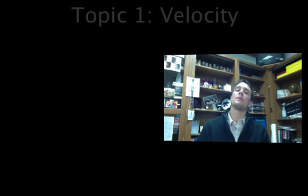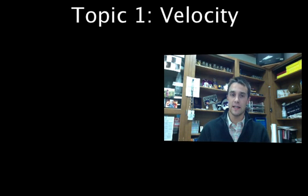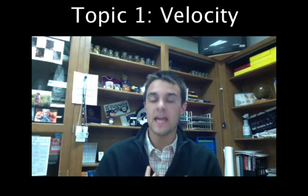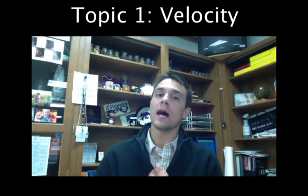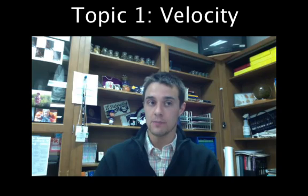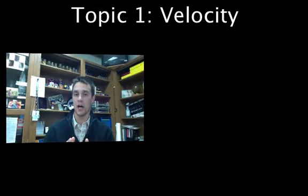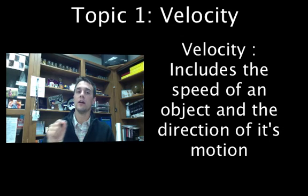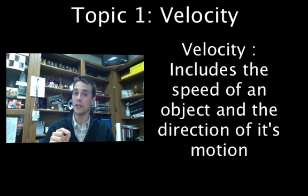Speed is probably the most popular statistic that people discuss when studying, watching, or cheering on their favorite NASCAR or NHRA drag racing team. Speed is everything in those sports. Velocity is essentially speed, but we also include the direction of an object's motion. The technical definition is: velocity includes the speed of an object and the direction of its motion.